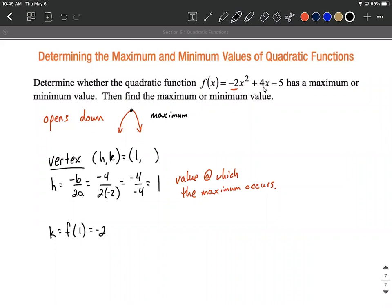So f(1) = -2(1)² + 4(1) - 5. Simplifying down, 1² = 1, so we have -2(1) = -2 + 4 - 5. Combining like terms, we get -2 + 4 - 5 = -3.